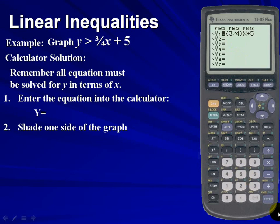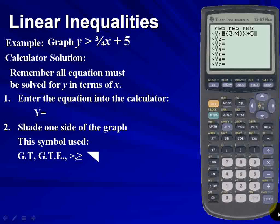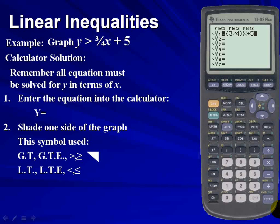Next, we have to determine which side of the graph we want to shade. Here are the symbols we want to use. If our equation contains a greater than or greater than or equal to, we want to use the portion where the upper half of the square is shaded. For inequalities such as less than or less than or equal to, we want to use the bottom half of the shaded square.